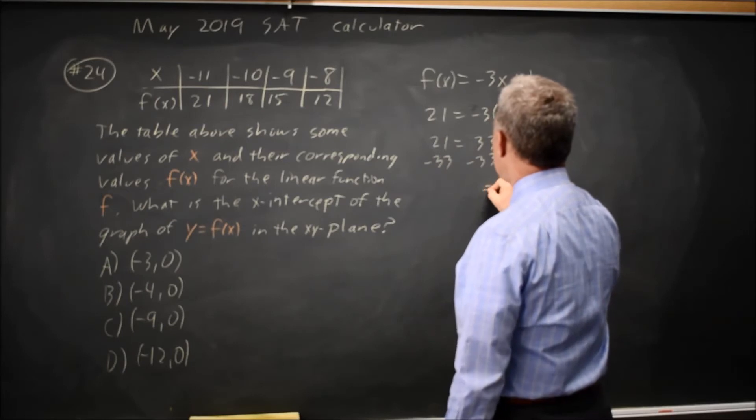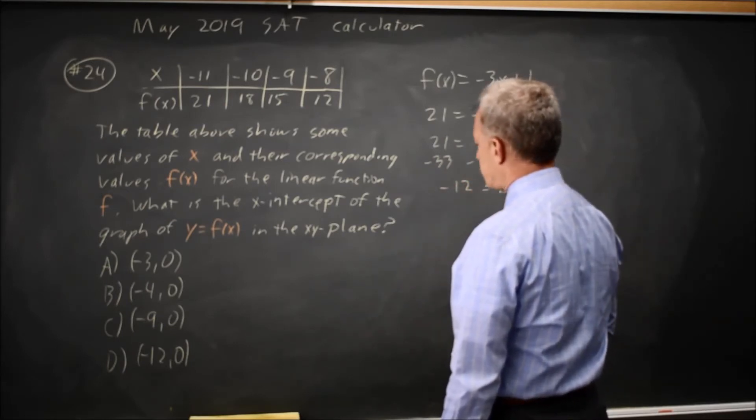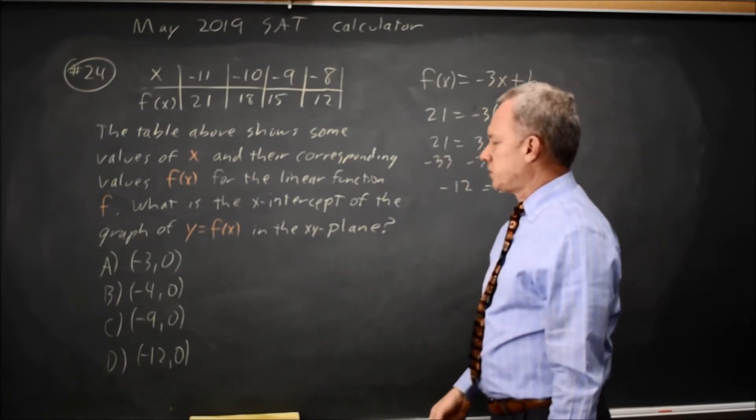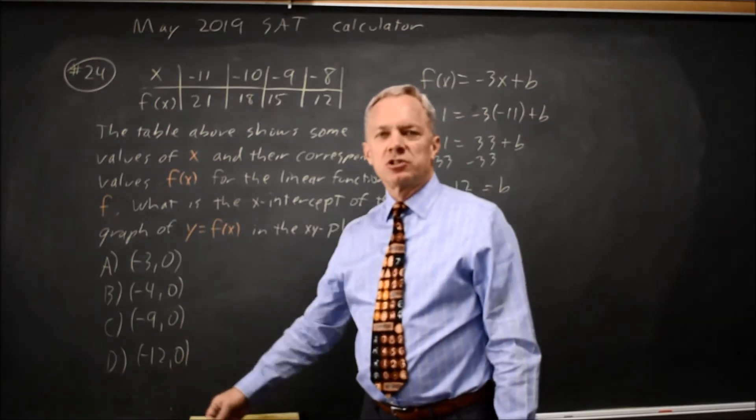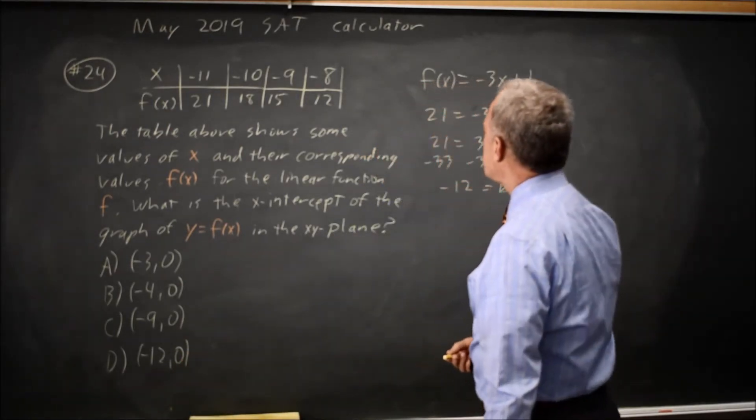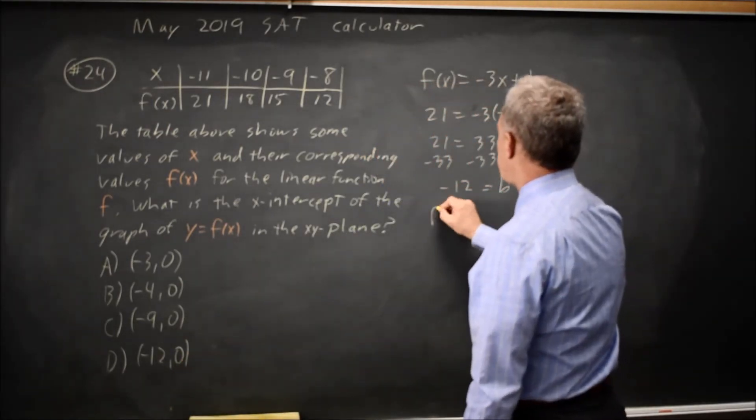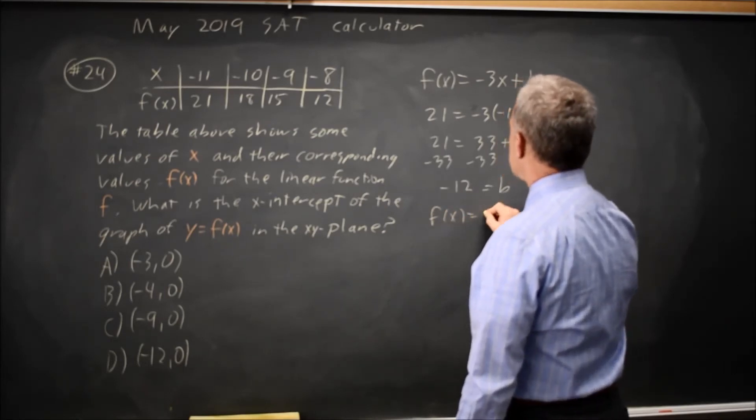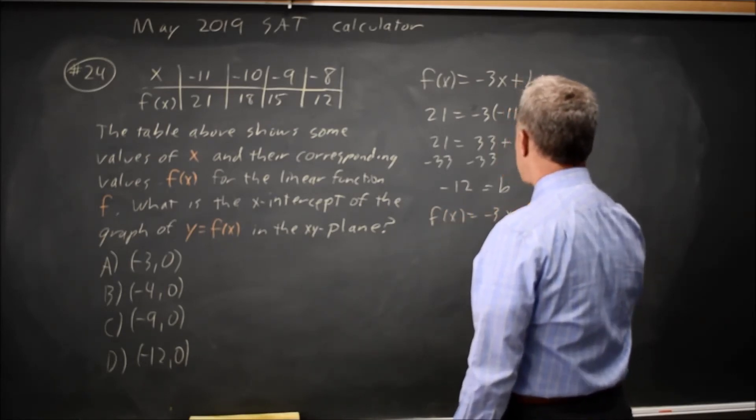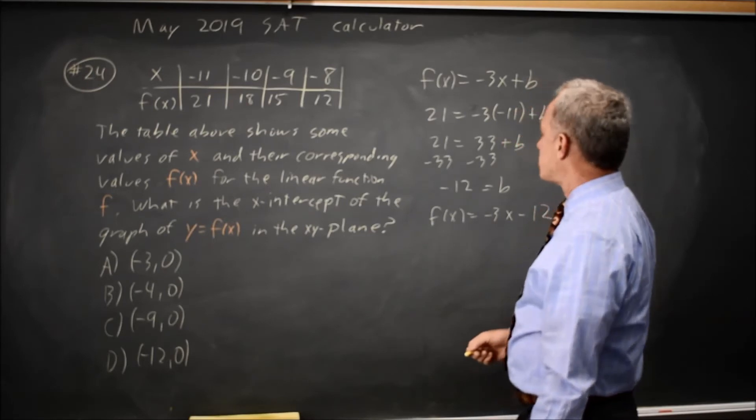I get b = -12, which tempts us to go toward choice D, but remember, b is the y-intercept. f(x) = -3x - 12.